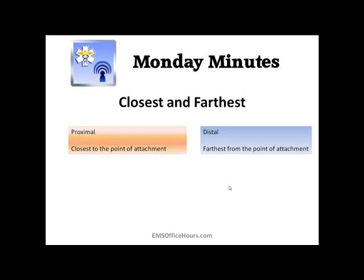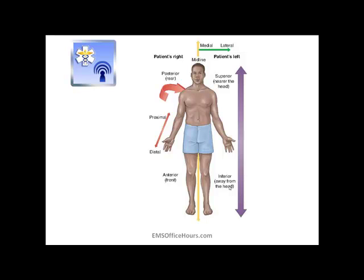Now closest and farthest — this is a little similar to what we just discussed. Closest would be proximal, which means closest to the point of attachment to the body. Distal is when it's farthest from the point of attachment to the body. You can see the proximal and distal areas on this image. For example, distal pulses — like their radial pulses — would be down towards the wrist.